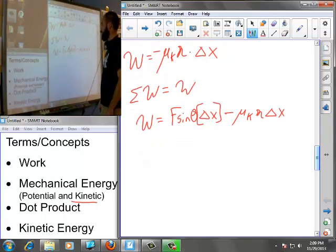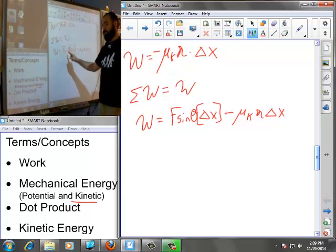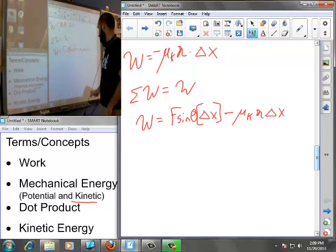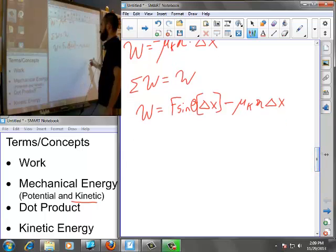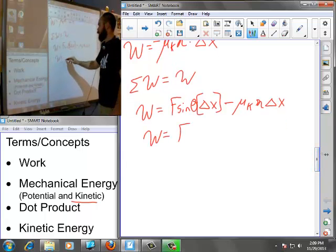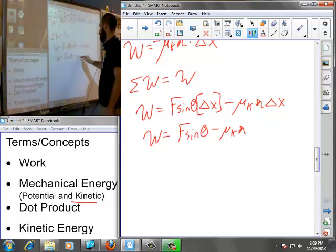Work is not actually a vector quantity, which makes it hard to give a direction to it, but it obviously can either be working for or working against. So our work done by friction is negative mu k n times delta x.